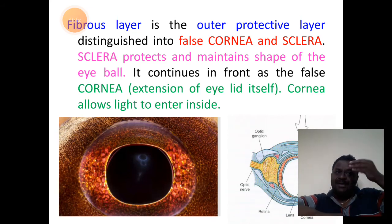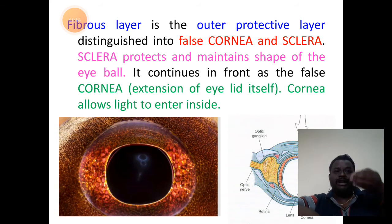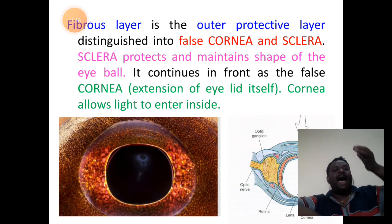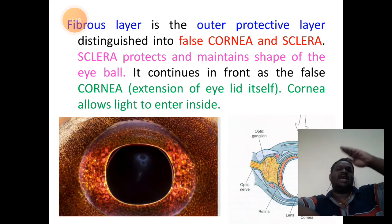The frontal part we call the cornea. The back part — the rest of the portion of the eye — we call the sclera.